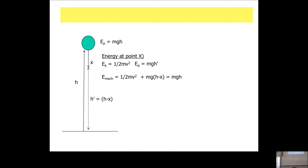Let's say you lifted the object up to a height h, and then it drops down a certain distance x to a height h prime. So h prime will be h minus x. What's the energy going to be at that intermediate point?